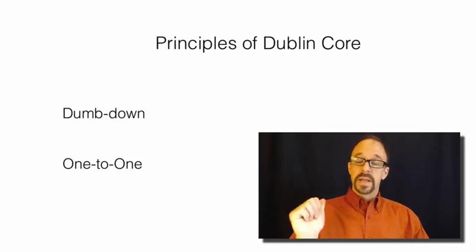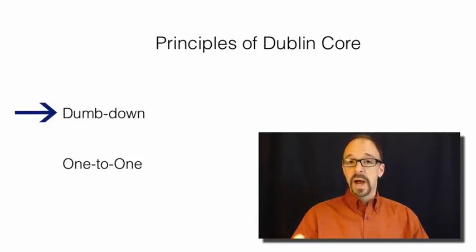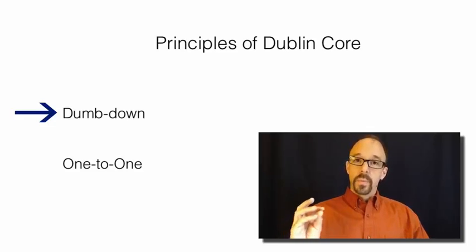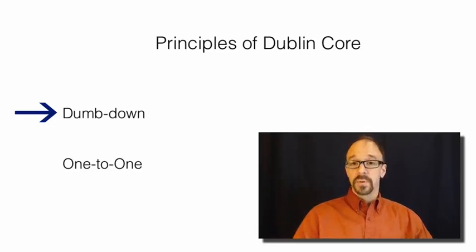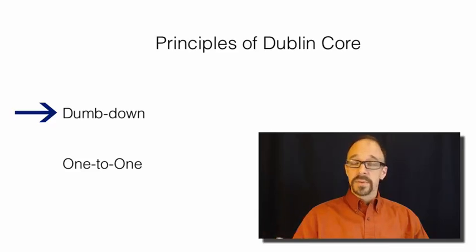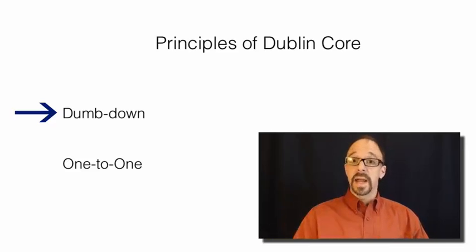The first one is the dumb-down principle, which is possibly the best name of anything in the entire metadata world. We've actually talked about the dumb-down principle before. The dumb-down principle is simply that if an element is not relevant for describing the thing that you're describing, you just leave that element off.